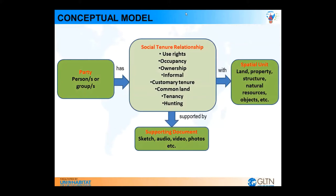The key diagram for STDM has four components, with three being the most important: the party, the spatial unit, and the relationship between them — called the Social Tenure Relationship or STR. Supporting that relationship are supporting documents such as photos or videos. Rights can include occupancy, ownership, customary tenure, tenancy, hunting rights, or religious rights within a particular area.